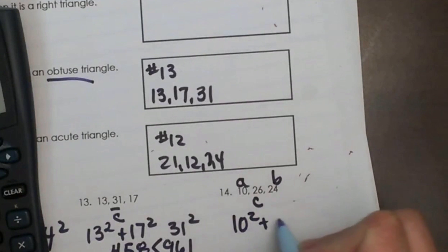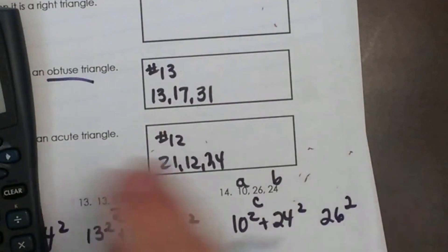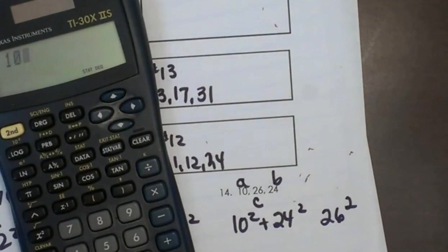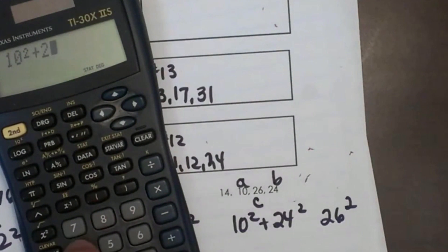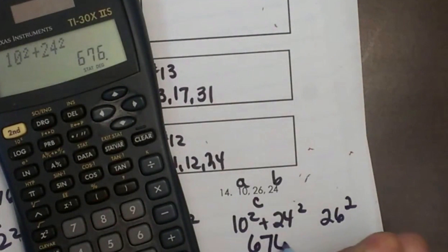So 10 squared plus 24 squared, how does that compare to 26 squared? Well, 10 squared plus 24 squared is 676, and 26 squared is 676.